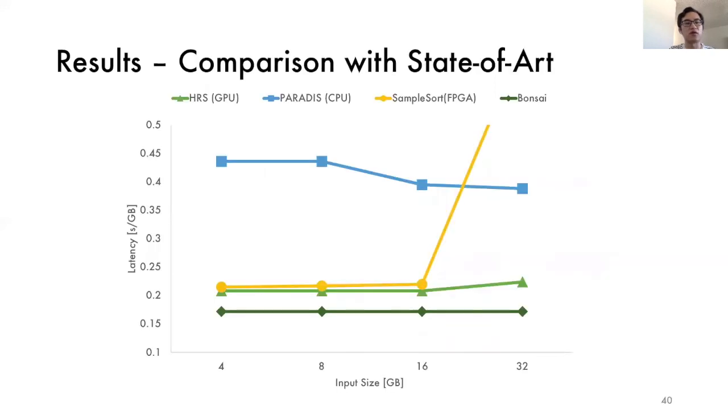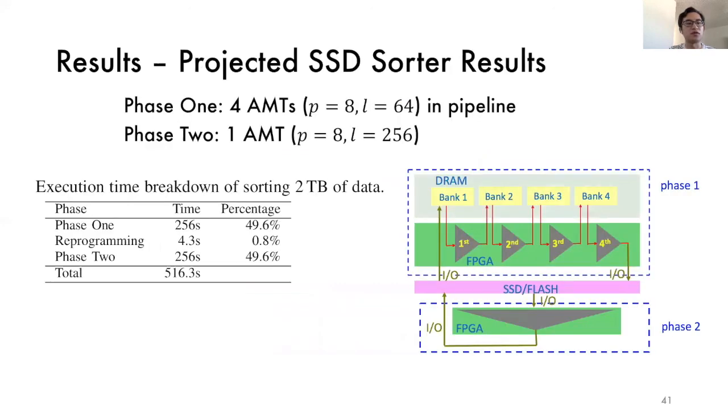We also compare our optimized DRAM sorter with state of art CPU, GPU, and FPGA sorters. As we can see, our sorter always has the best performance across the datasets with a size of 4 to 32 gigabytes. We also list our projected SSD sorter performance, which contains two different phases as mentioned before. As we can see, the reprogramming time is negligible when compared with the total sorting time, showing the idea of two phases works.